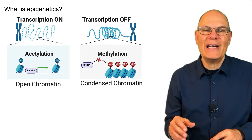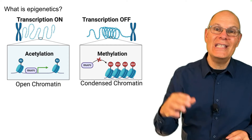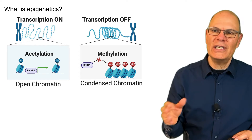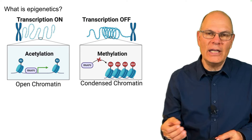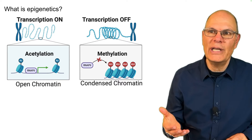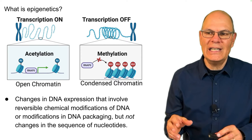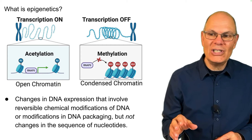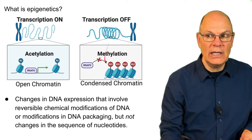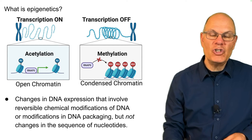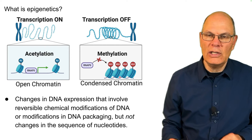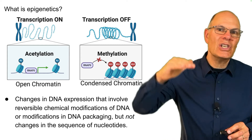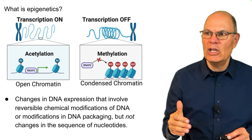What is epigenetics? In most cells, most of the DNA is not transcribed — it's silenced, it's turned off. Only a small number of genes are turned on. Epigenetics are changes in DNA expression that involve reversible chemical modifications of DNA or modifications in DNA packaging. Chemical modifications of DNA? Methylation. Modification in DNA packaging? Wrapping around proteins called histones. But the genes themselves — the sequence of nucleotides — is not changed. It's a level above the genetic level; that's why it's called epigenetics.